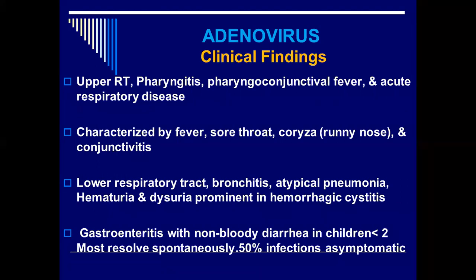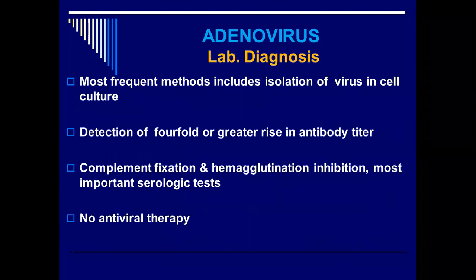Gastrointestinal tract infections occur in serotype 40, with non-bloody diarrhea in children, mostly less than two years of age. It is mostly self-limited and 50% of infections are asymptomatic. Diarrhea in children — one major cause of viral diarrhea is rotavirus, but some adenovirus serotypes can also cause diarrhea in children less than two years of age. The most frequent diagnostic method is isolation of the virus in cell culture, but again this requires specialized techniques. We depend on serology — antibody titers — and a four-fold or greater rise in antibody signifies past infection.